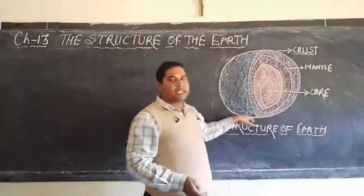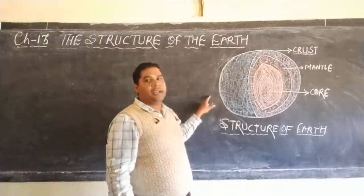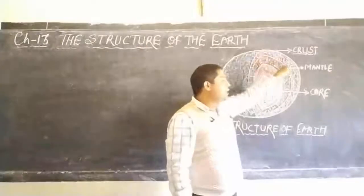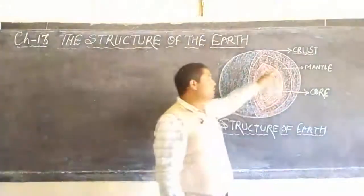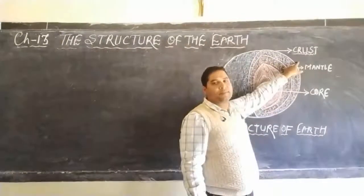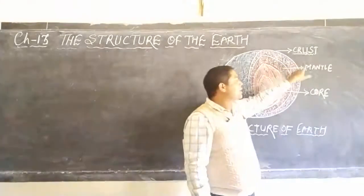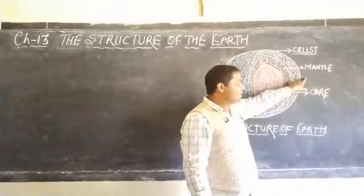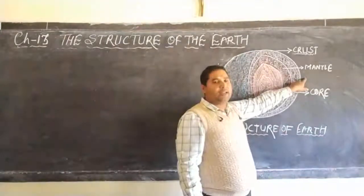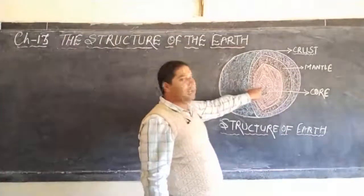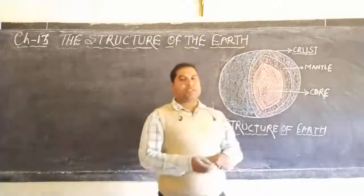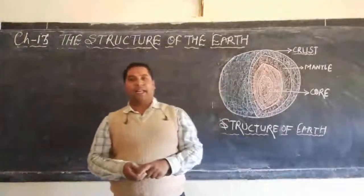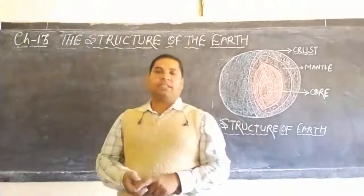The structure of the Earth is like a spherical ball. The outer layer of the Earth is known as crust, the middle layer of the Earth is known as mantle, and the deepest layer of the Earth is known as core. So, let us know about the layers of the Earth in detail.